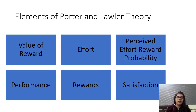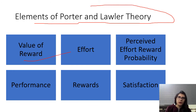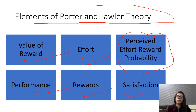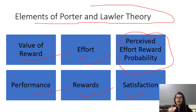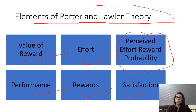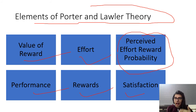The theory is based on the assumptions that behavior is determined by many factors in an individual and the environment, and individuals are rational beings who make conscious decisions about their behavior. Everyone has different needs, desires, and goals, so their behavior is related to these. The main elements of the Porter and Lawler theory are value of reward, effort, rewards, performance, satisfaction, and perceived effort-reward probability — that is, how much effort is needed to achieve the reward.